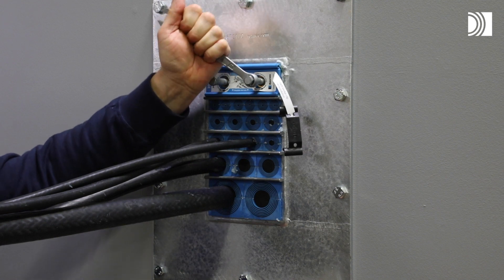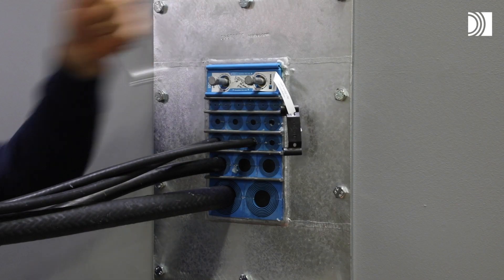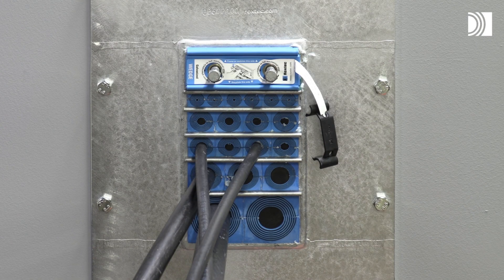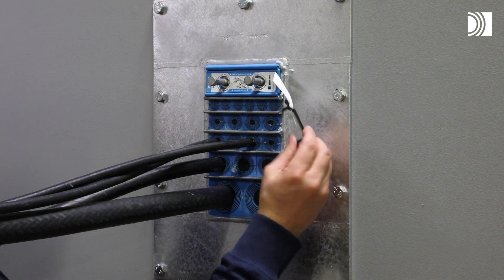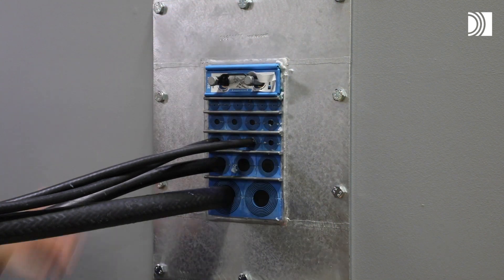The wedge will compress and seal the transit and the excess lubricant will be squeezed out. Excess lubricant is a sign of good compression. Attach the wedge clip to the wedge screws to complete the installation.